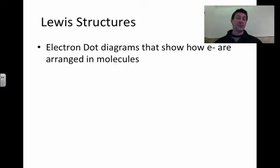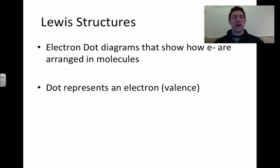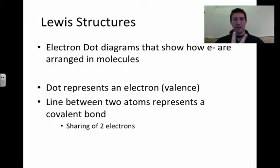Lewis Structures, also called electron dot diagrams — some people call them electron dot diagrams, you can call them whichever. They show how many electrons are arranged into molecules. A dot represents a valence electron only, and a line between two atoms represents a covalent bond. Anytime you see a line between two atoms, it means there are two electrons on that line, and those two electrons are being shared by both of those atoms.